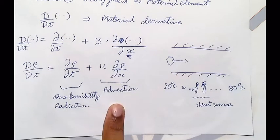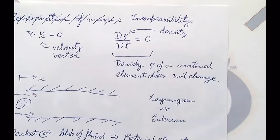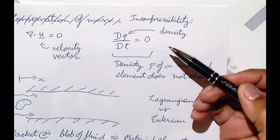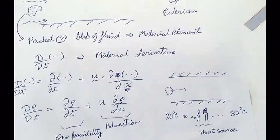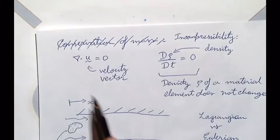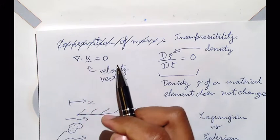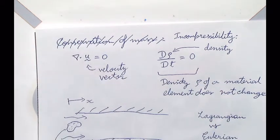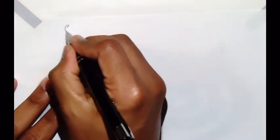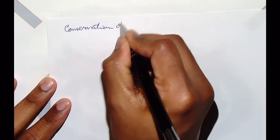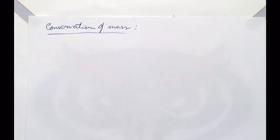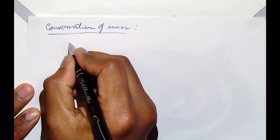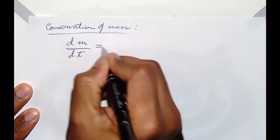Going back to incompressibility, we said that the density of the fluid blob cannot change either due to time changes or due to advection. Now the question is: how do we get from the material derivative form to nabla dot u equals zero? To see where that comes from, we will look at conservation of mass.